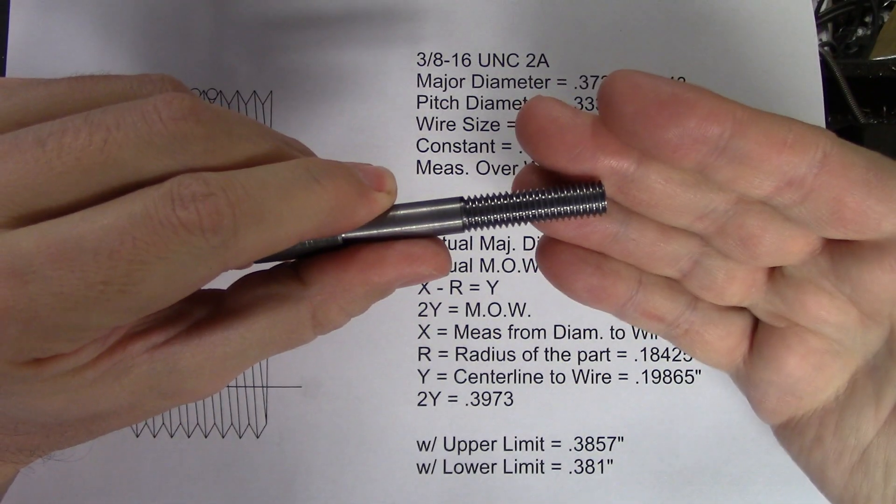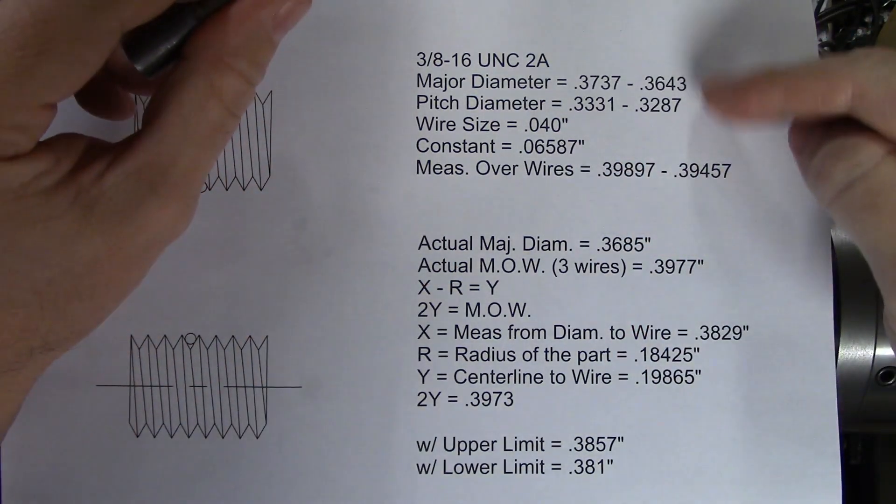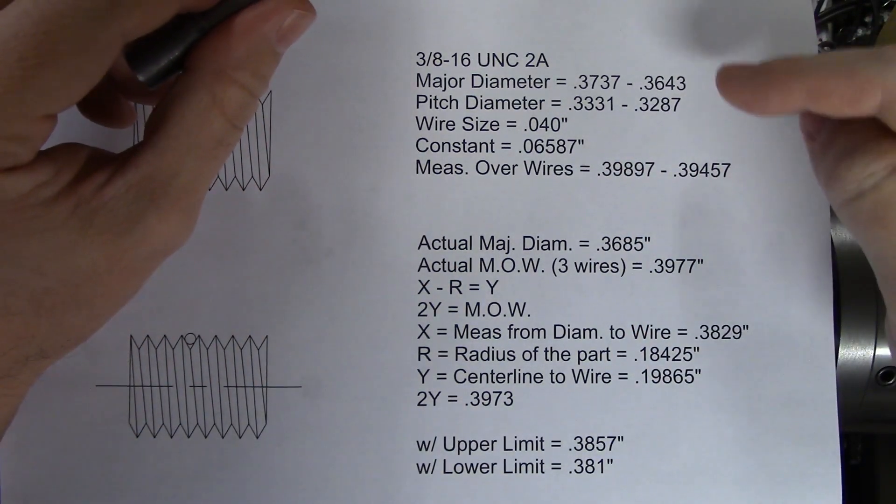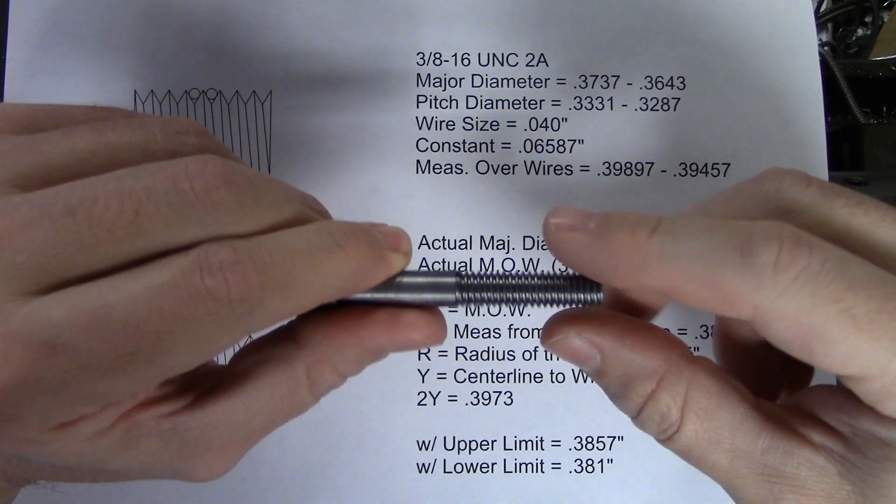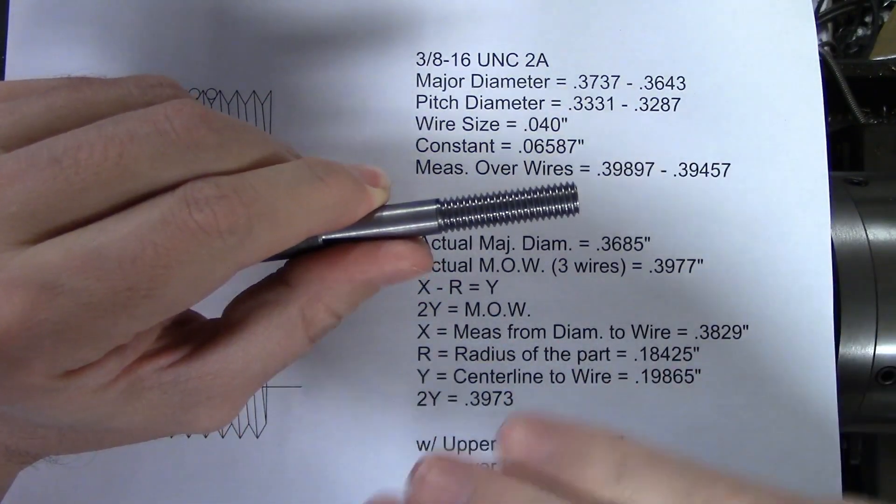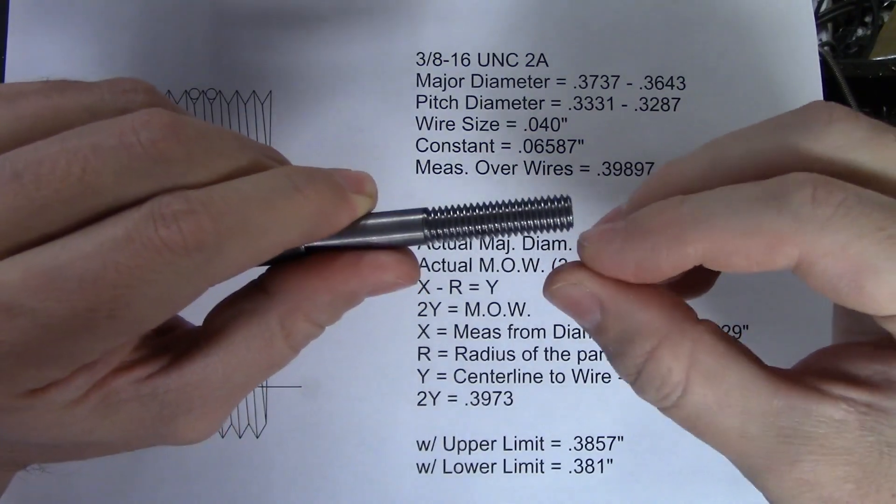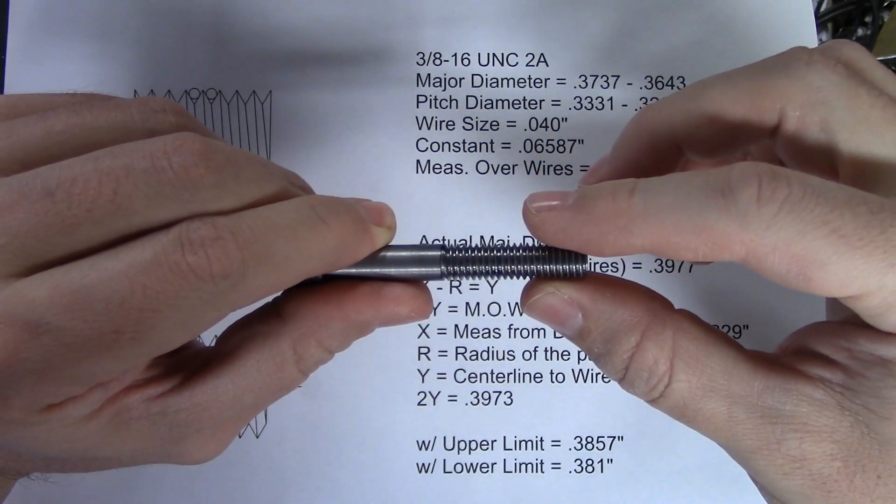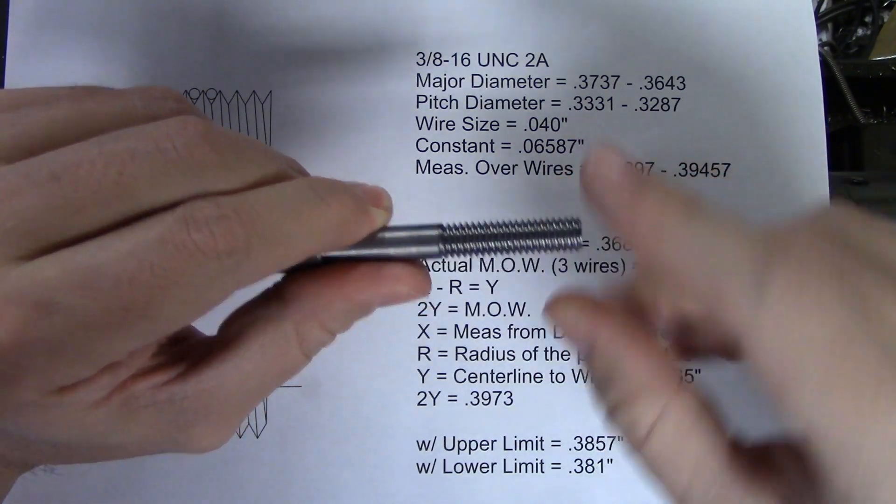The thread I have here is a 3/8-16 thread, and here are the relevant specifications for major diameter and pitch diameter. Pitch diameter is what you're trying to measure with the thread wires, and it is the most important measurement on any thread, even though it's the distance between two imaginary lines that bisect your threads. Why? It is the measurement that determines your class of fit.